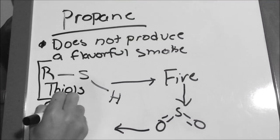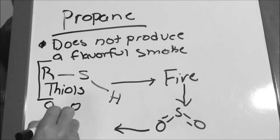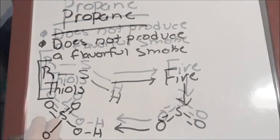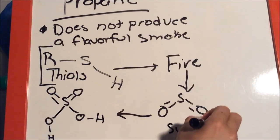When burned, the thiols release sulfur dioxide that, when introduced to hydrogen, turns into sulfuric acid. However, it is not a significant amount of acid, so it is not harmful.